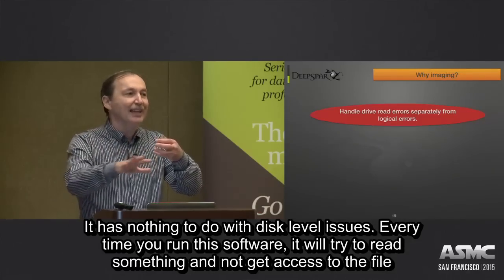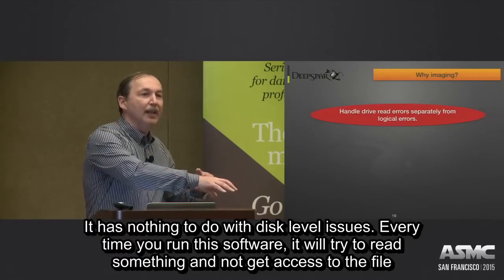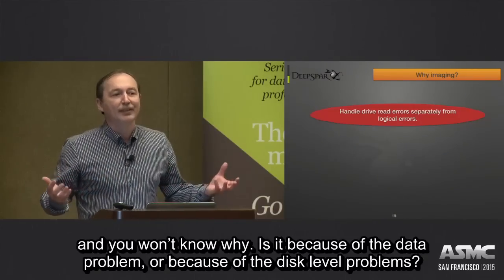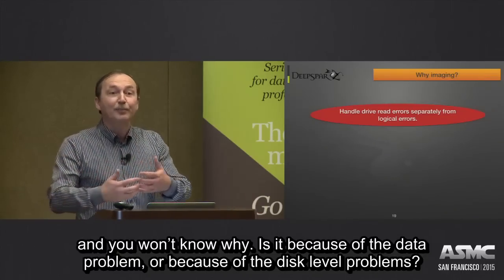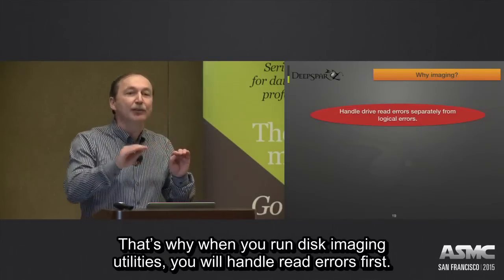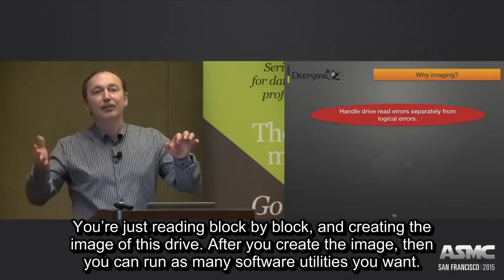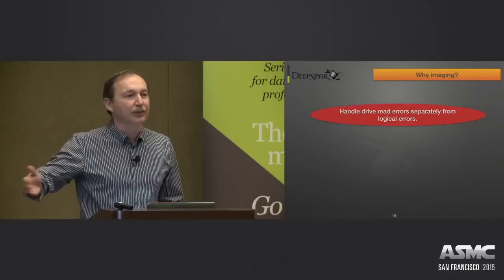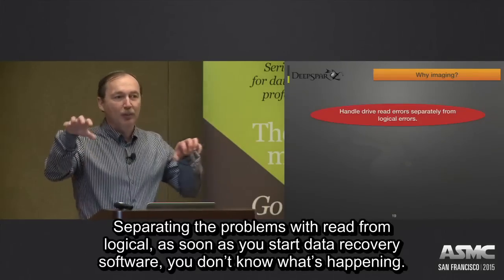Every time you run data recovery software on a bad drive, it will try to read something and it will not get access, it will not be able to list a file tree, and you don't know why — is it because of a data-level problem or because of disk-level problems? That's why when you run a disk imaging utility, you handle read errors first, reading block by block and creating the image. After you create an image, you can run as many software utilities as you want — it's completely safe because you're working on a healthy drive, and you are separating read problems from logical problems.